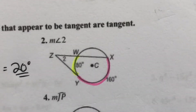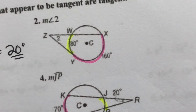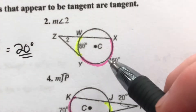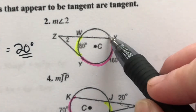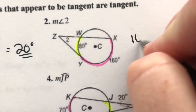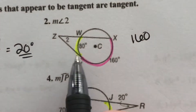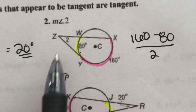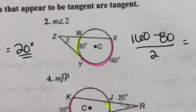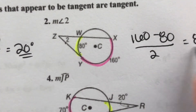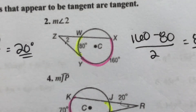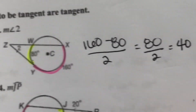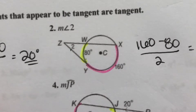Number two: big minus little — pink minus yellow. This big arc is 160, this little arc is 80, divided by two. 160 minus 80 is 80, divided by two is 40. So our angle over here is 40 degrees.